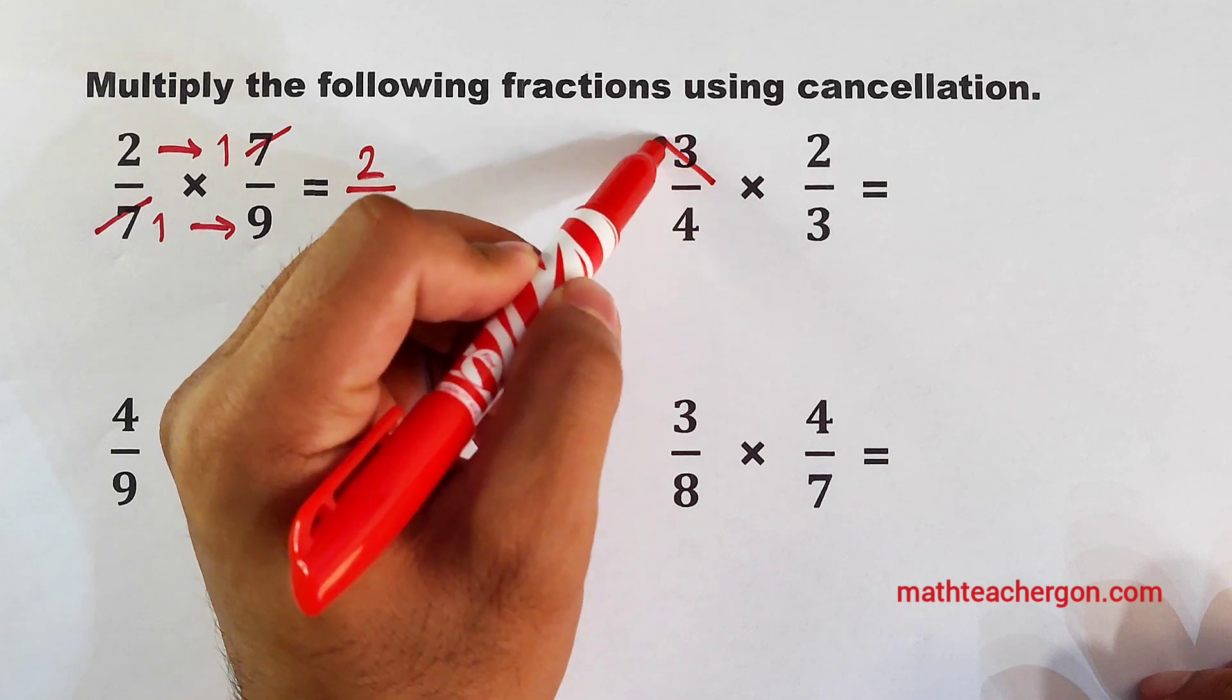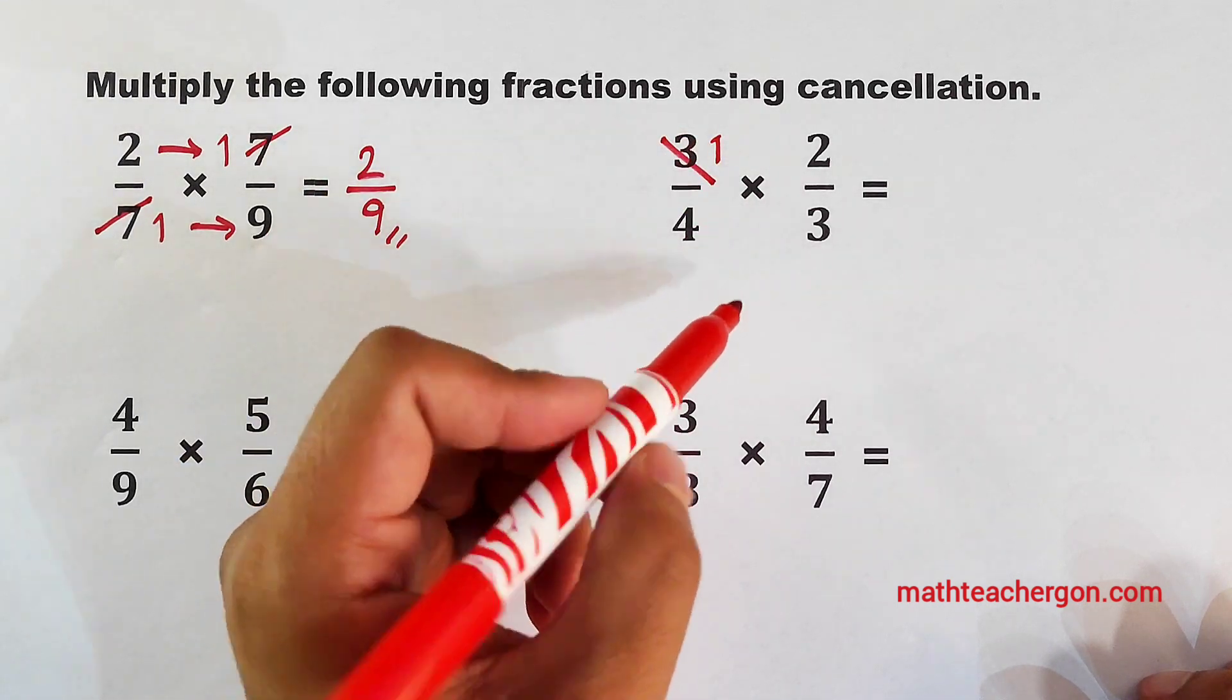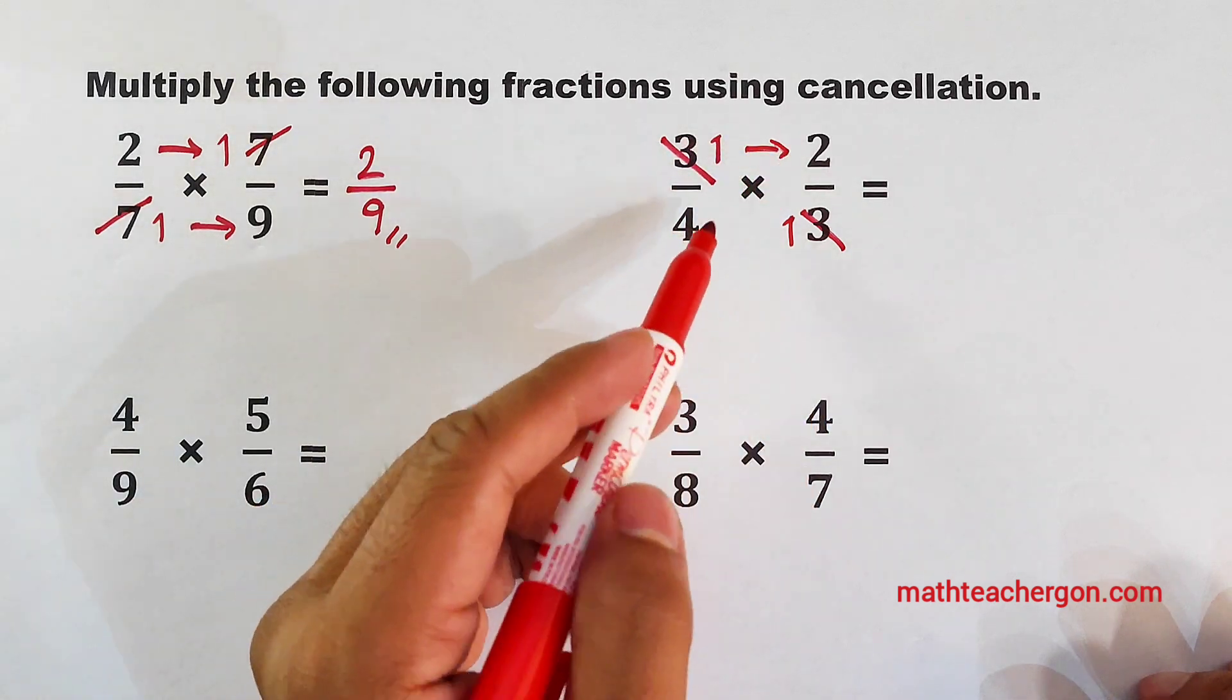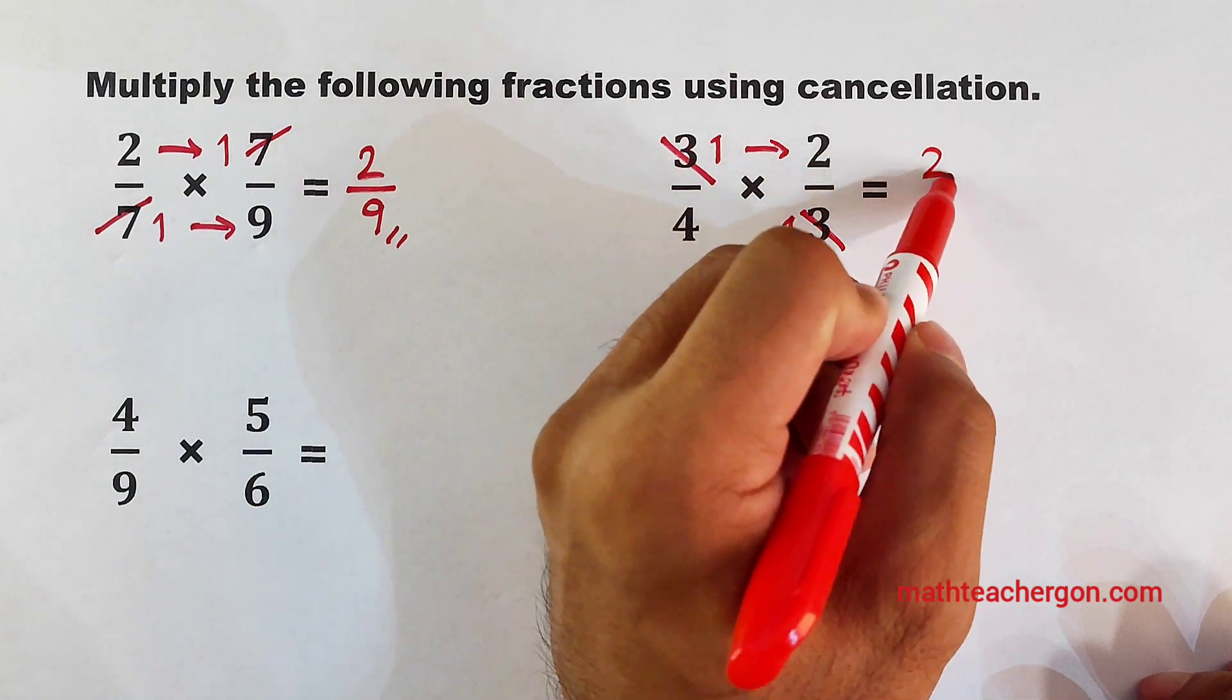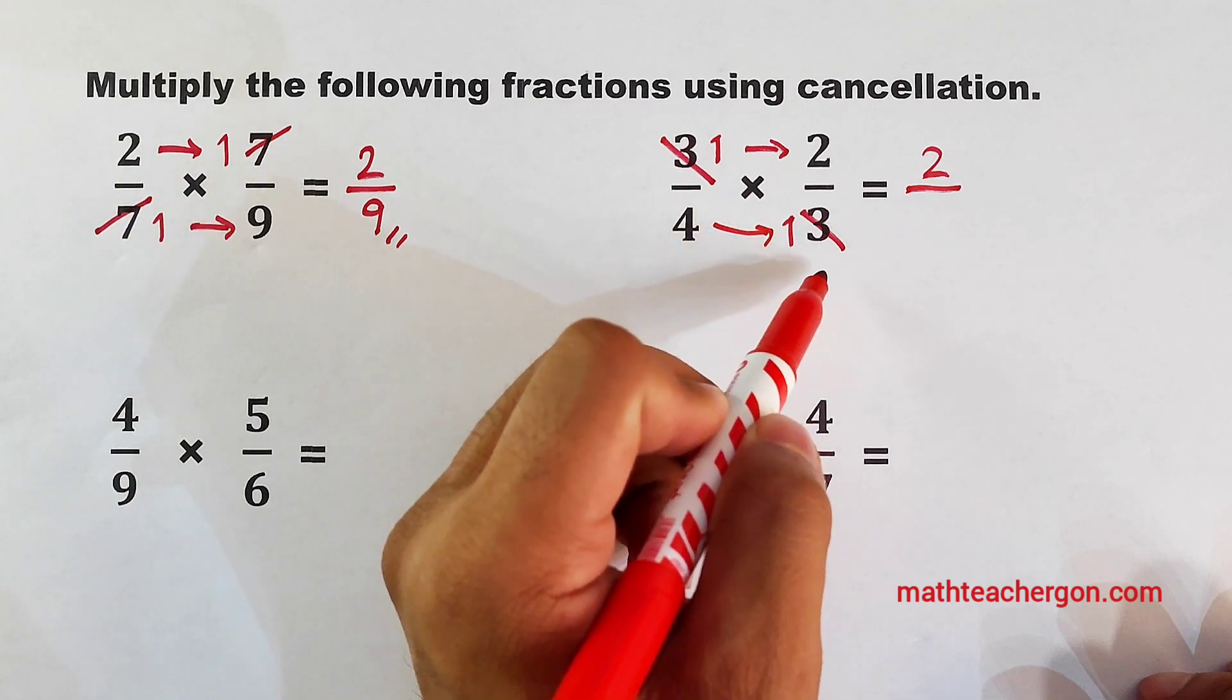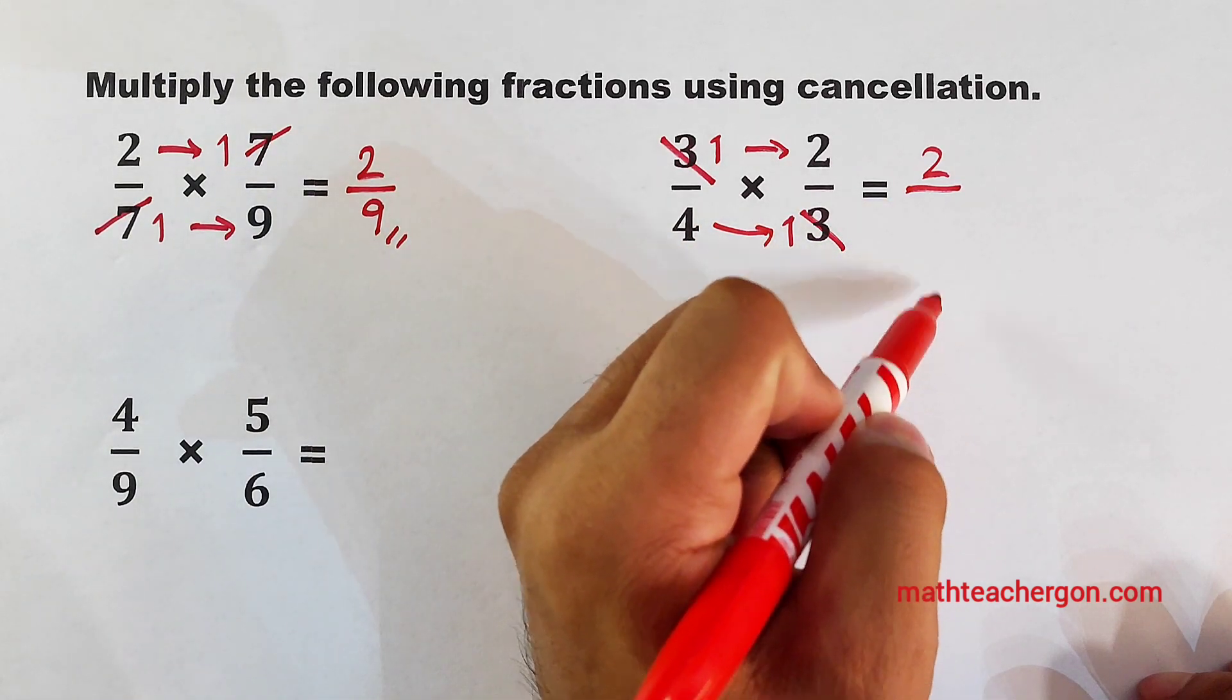In this case, cancel this out, it will become 1. Cancel this out, it will become 1. And you can multiply the numbers. 1 times 2, that is equal to 2, over 4 times 1, that is equal to 4.